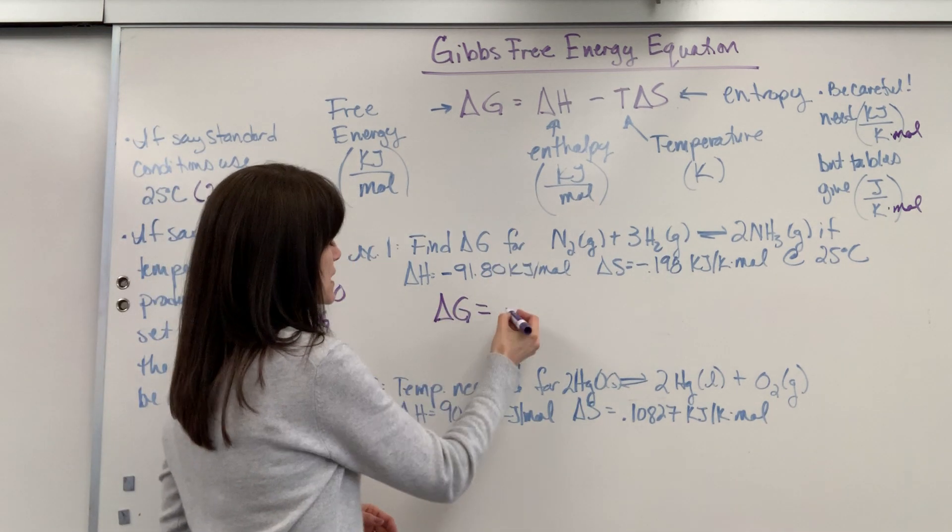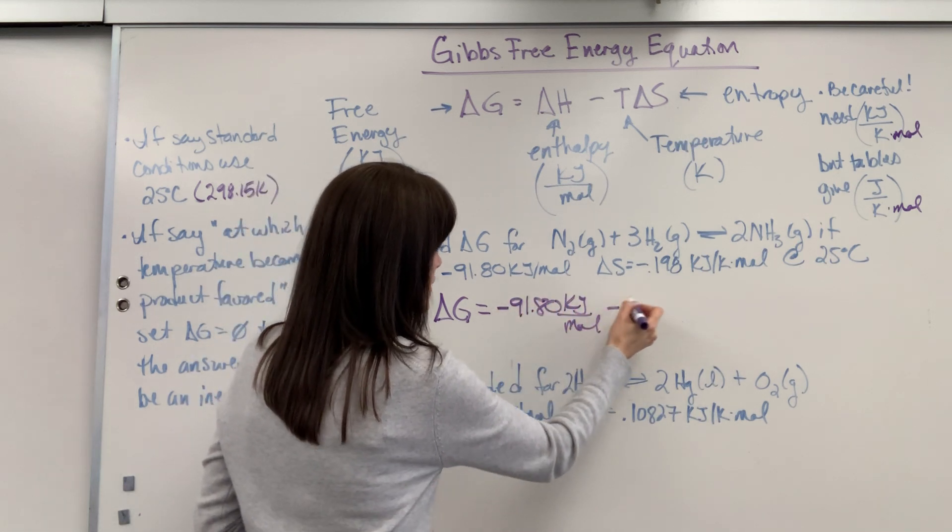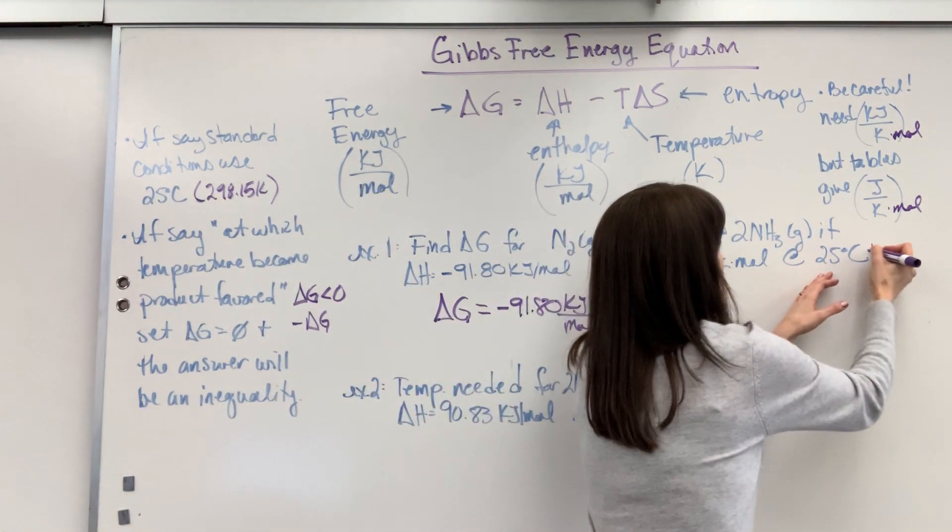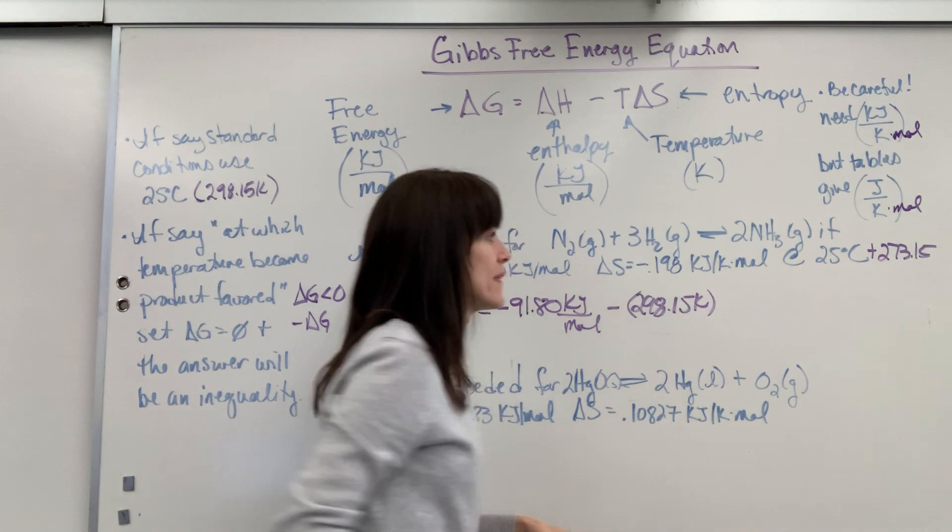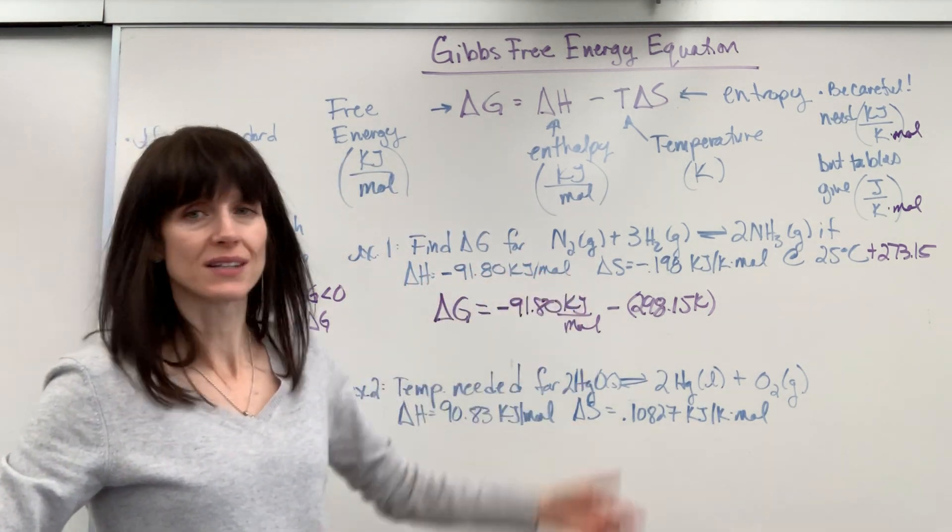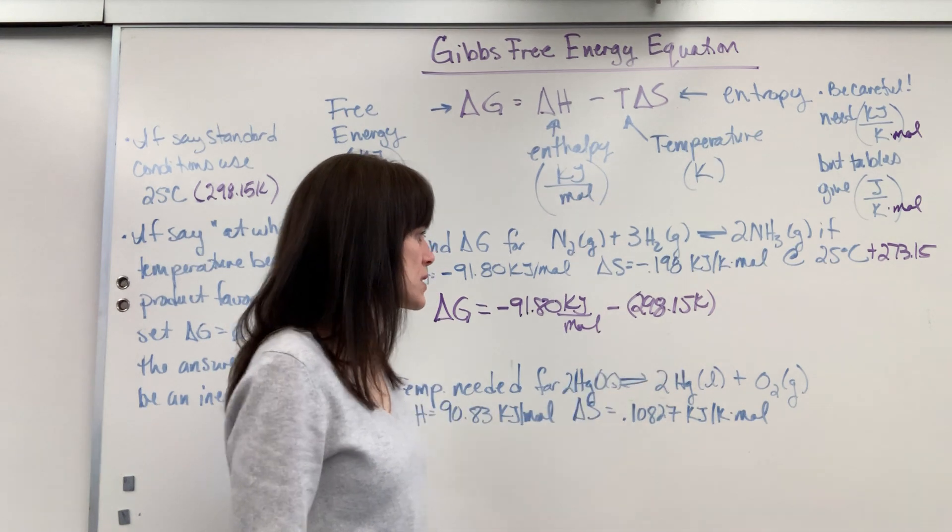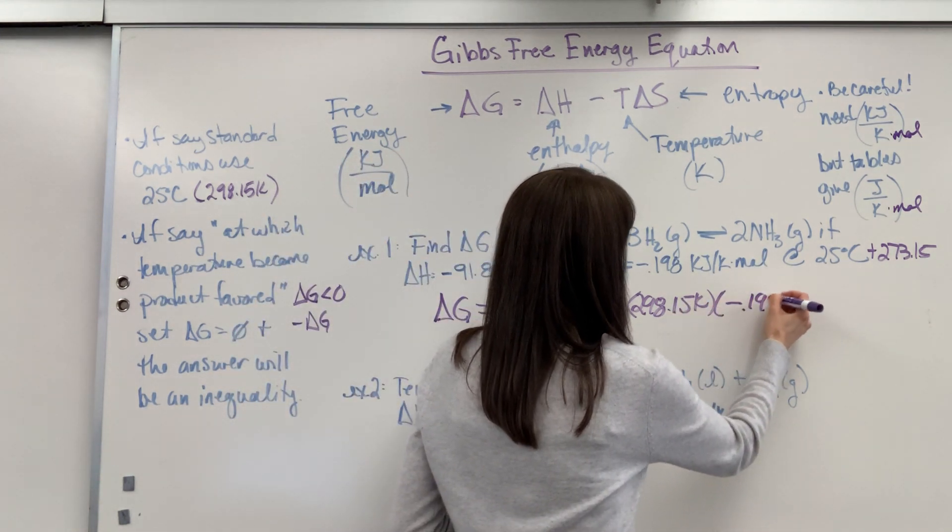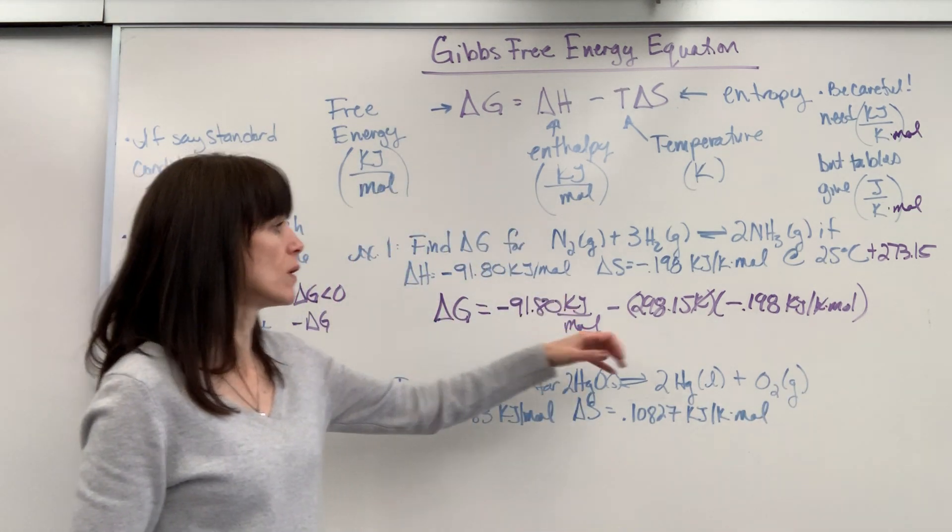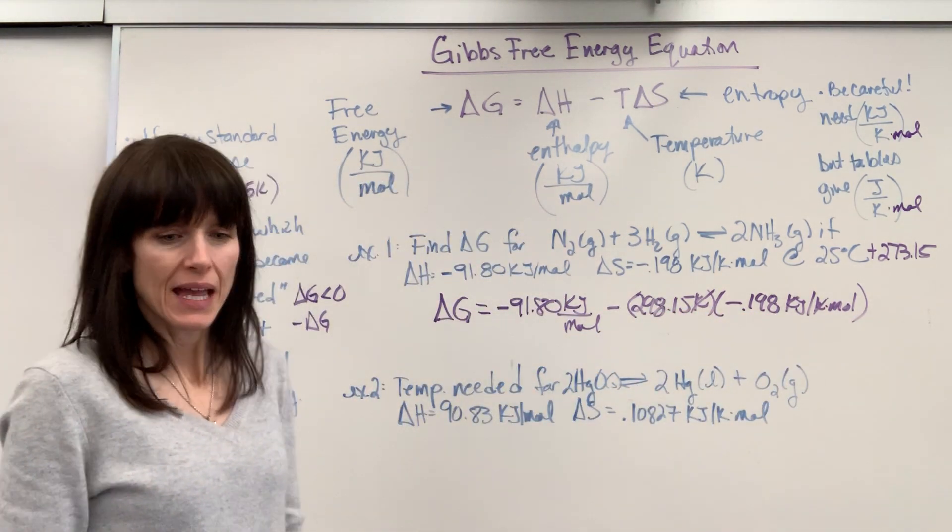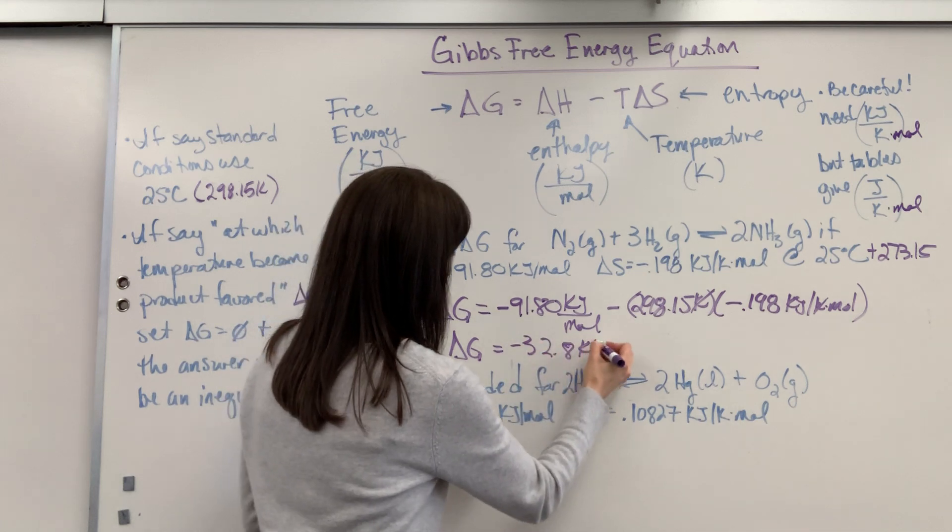Let's go ahead and plug into Gibbs free energy. So we're going to have delta G equals my delta H, which is negative 91.80 kilojoules per mole, minus the temperature. I'm at 25 degrees C. Let's add that to the 273.15, and that gives us the 298.15 Kelvin. Remember, they could have said find delta G at standard conditions with delta H and delta S. That's going to be standard conditions. Times my delta S, which is negative 0.198 kilojoules divided by Kelvin times mole. Notice, Kelvin cancels. So we have kilojoule per mole plus kilojoule per mole. Perfect. And the answer on this, when we do the calculation, delta G is going to equal negative 32.8 kilojoules per mole.